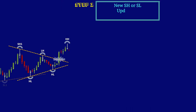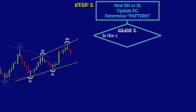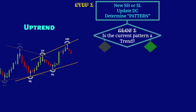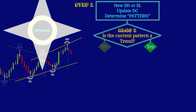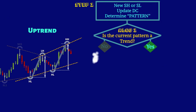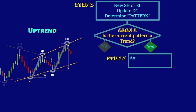You keep updating the new dynamic channel until the new trend pattern is formed. A positive answer to ALGO 1 triggers step two, which is momentum analysis by the range and slope methods.